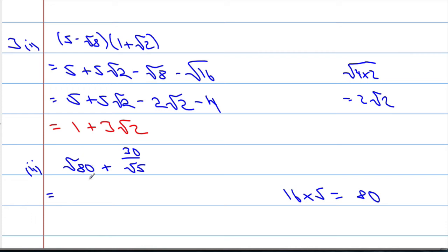So the square root of 80, I can actually write as the square root of 16 times 5, plus 30/√5. Square root of 16 times 5 is going to be 4√5.